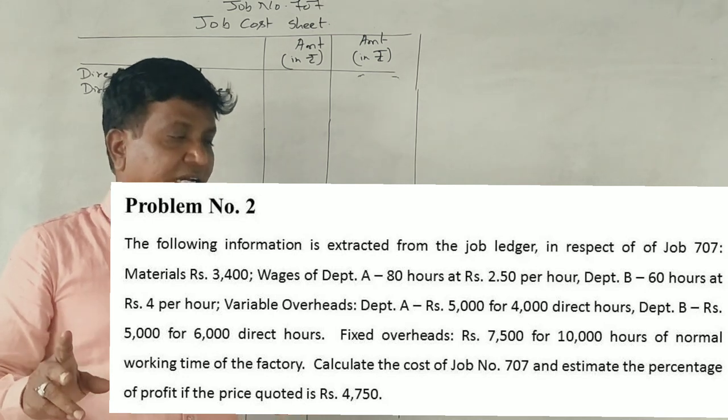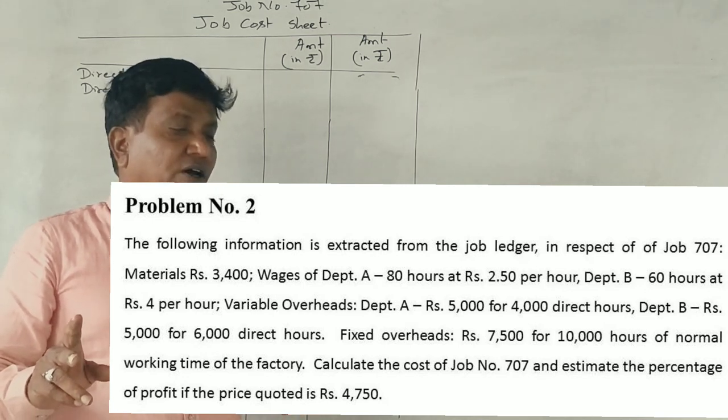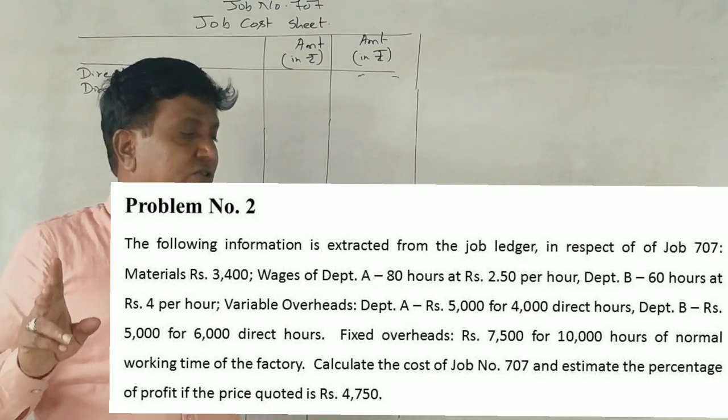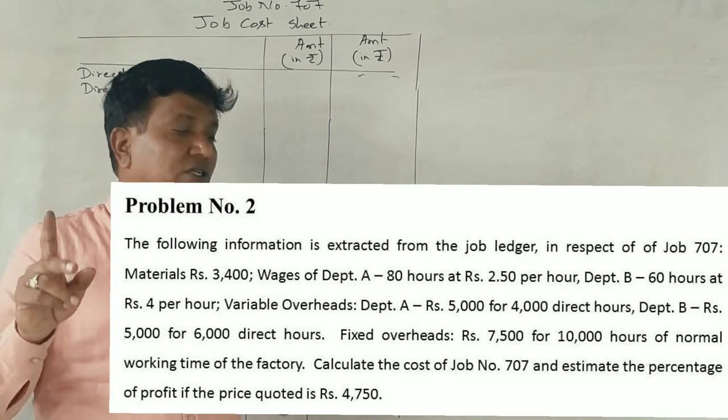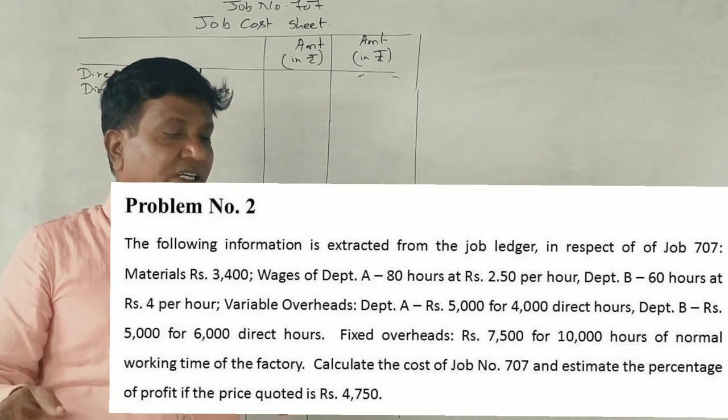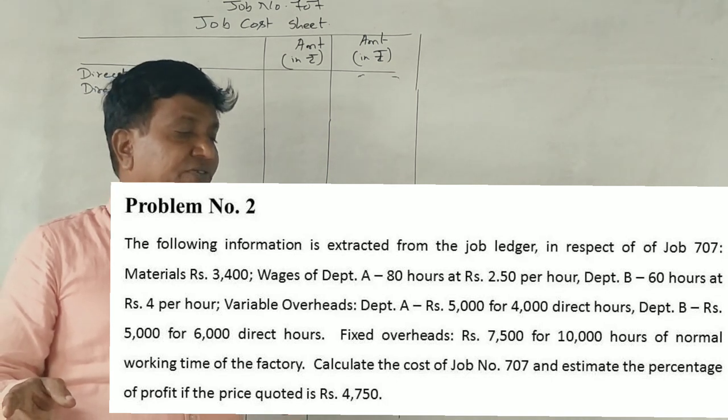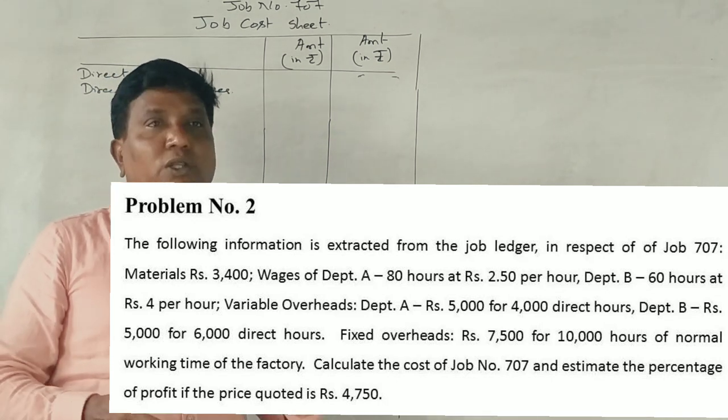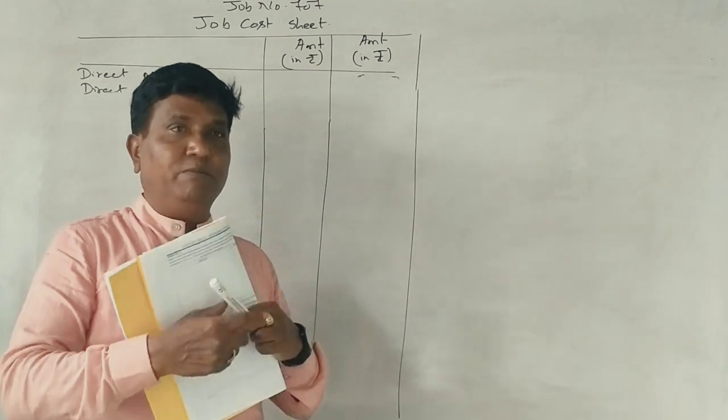Fixed overheads would be Rs. 7,500 for 10,000 hours of normal working time in the factory. Calculate cost of Job 707 and estimate the percentage of profit if the price quoted is Rs. 4,750.